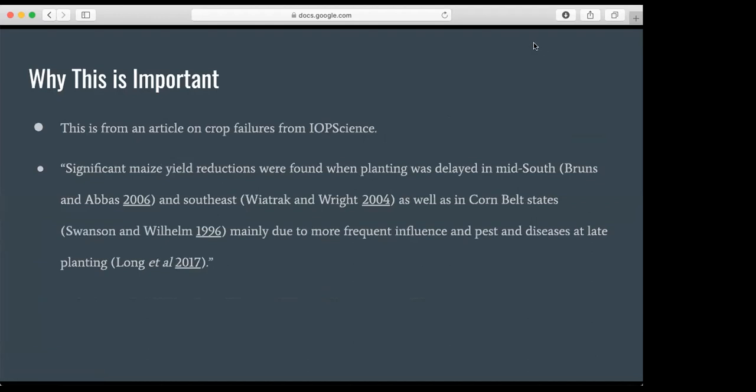So why is this important? This is an article from crop failures from IOPS Science. Significant maize yield reductions were found when planting was delayed in the mid-south and southeast as well as the corn belt states, mainly due to frequent influence in pest diseases at late planting.